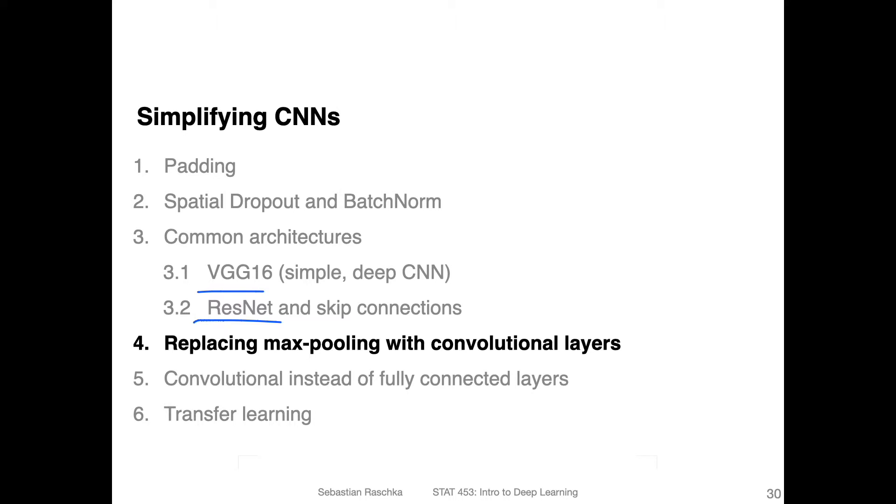So the first topic I want to talk about is replacing max pooling with convolutional layers. And then in the video after that, I want to talk about replacing fully connected layers by convolutional layers. So both videos will be essentially about simplifying a neural network architecture by getting rid of max pooling and getting rid of fully connected layers. It won't result necessarily in better performance, but it is just an interesting thought experiment.